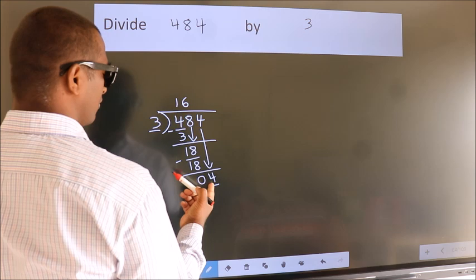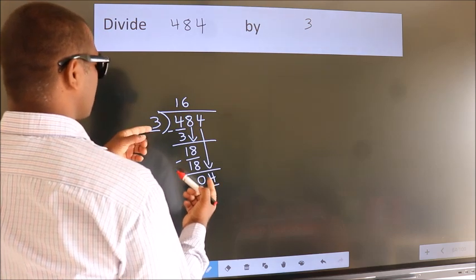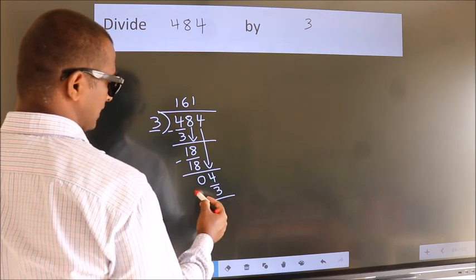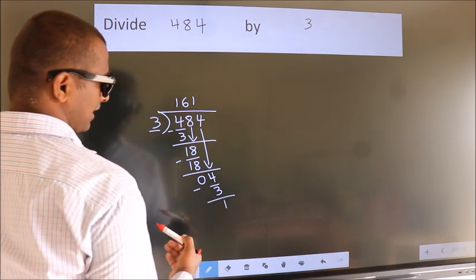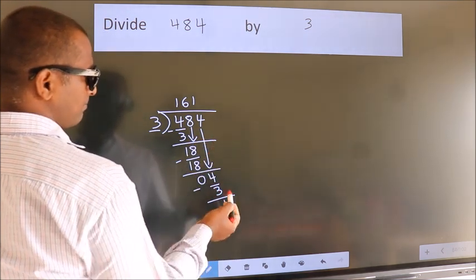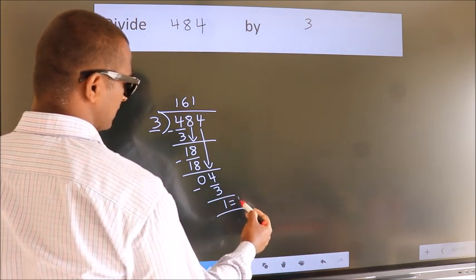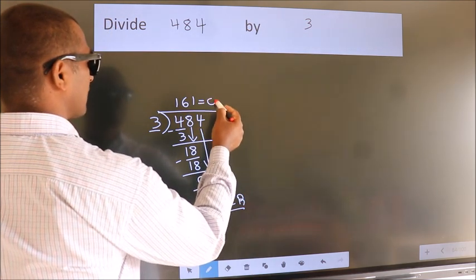A number close to 4 in 3 table is 3 1s 3. Now, we subtract. We get 1. No more numbers to bring it down. So, we stop here. This is our remainder. This is our quotient.